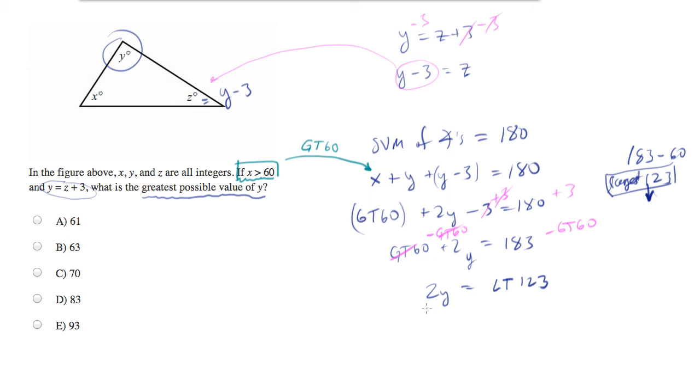All right, now let's divide both sides. Keep going. Divide both sides by 2. And you'll end up with y is equal to... I'm going to plug this into a calculator since it doesn't divide evenly. 61.5. y is equal to less than 61.5.